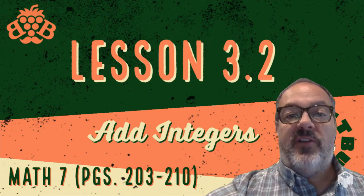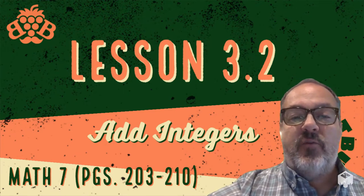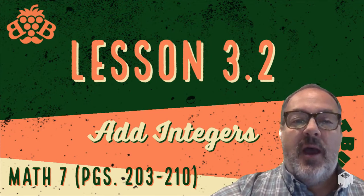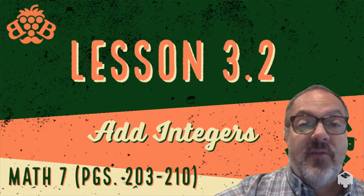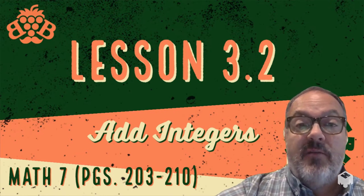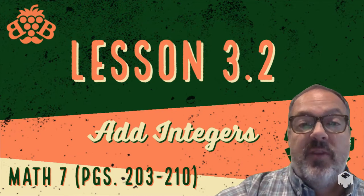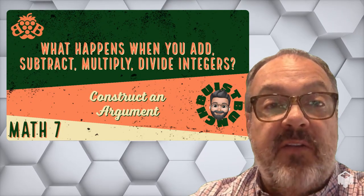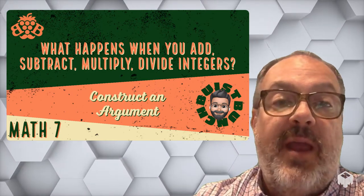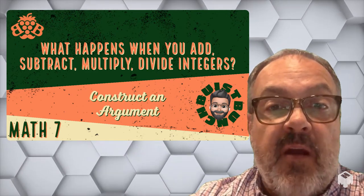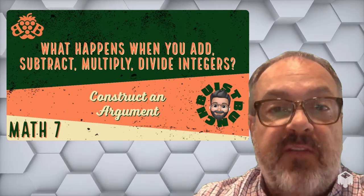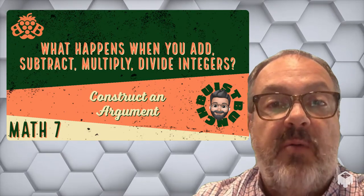In Lesson 3.2, Adding Integers, we're going to look at one way that we can think about adding integers and what happens when we add them. In another video, we'll look at a different strategy. I want you to get an understanding of how both strategies work and then use the one that works best for you. Just a reminder that our essential question for Chapter 3 is: what happens when you add, subtract, multiply, or divide integers? Our mathematical practice is going to be to construct an argument, and we'll focus on those two things throughout this chapter.